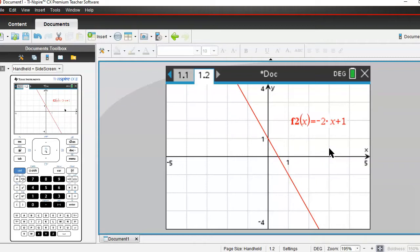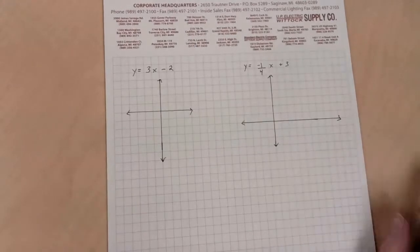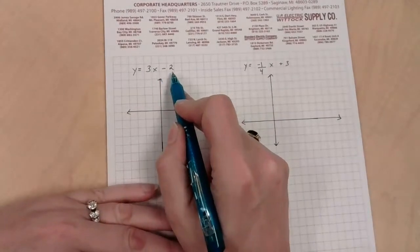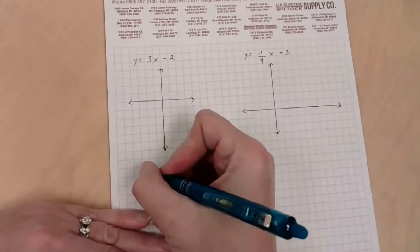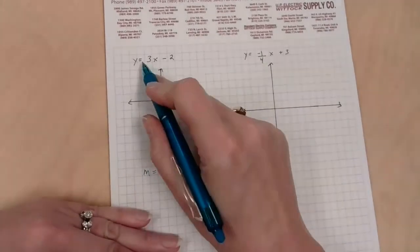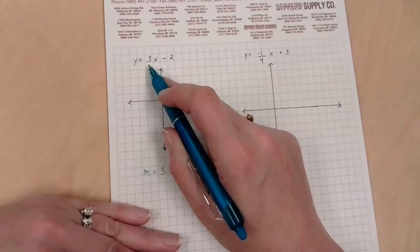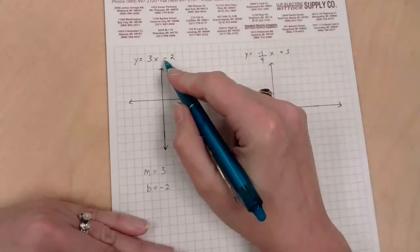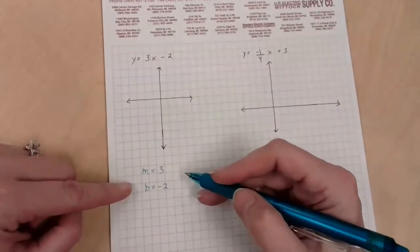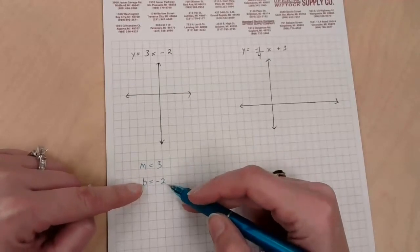So just by knowing what that number and that number mean and what they do in the graph, I can have two graph points really fast. I've got a couple of examples here. We are going to attempt to graph y equals 3x minus 2. This is our y equals mx plus b. It's not a plus, but that just means it's a negative number.